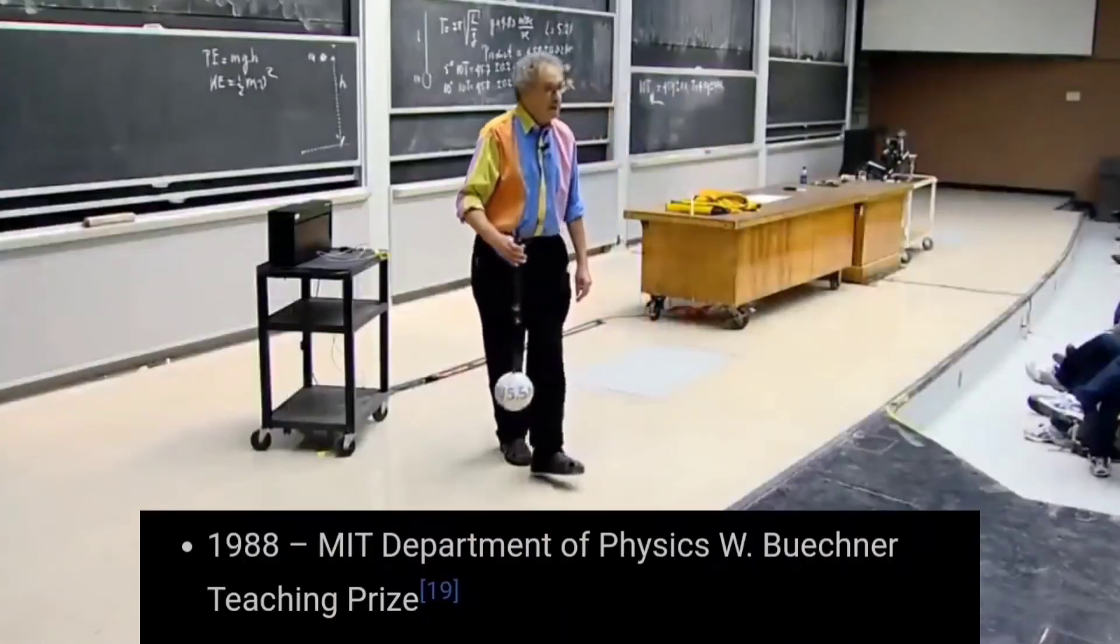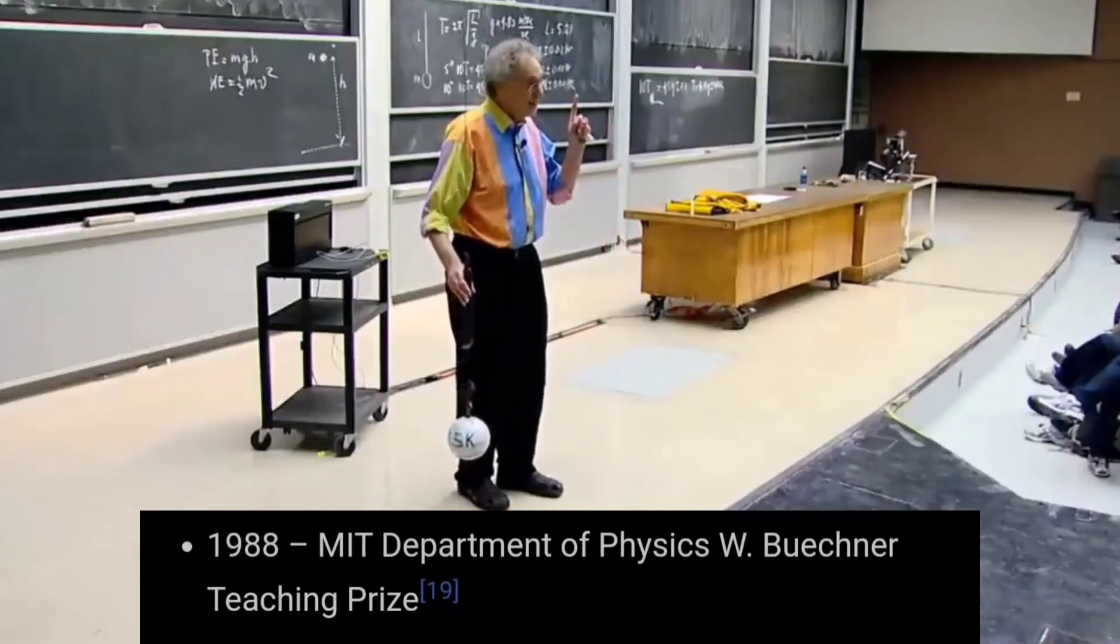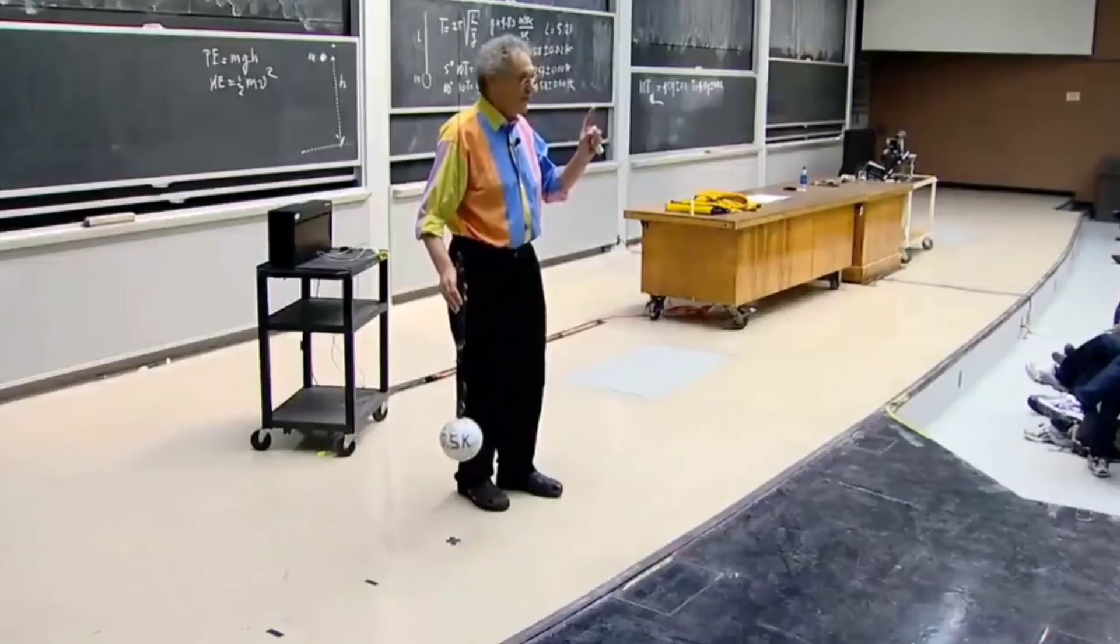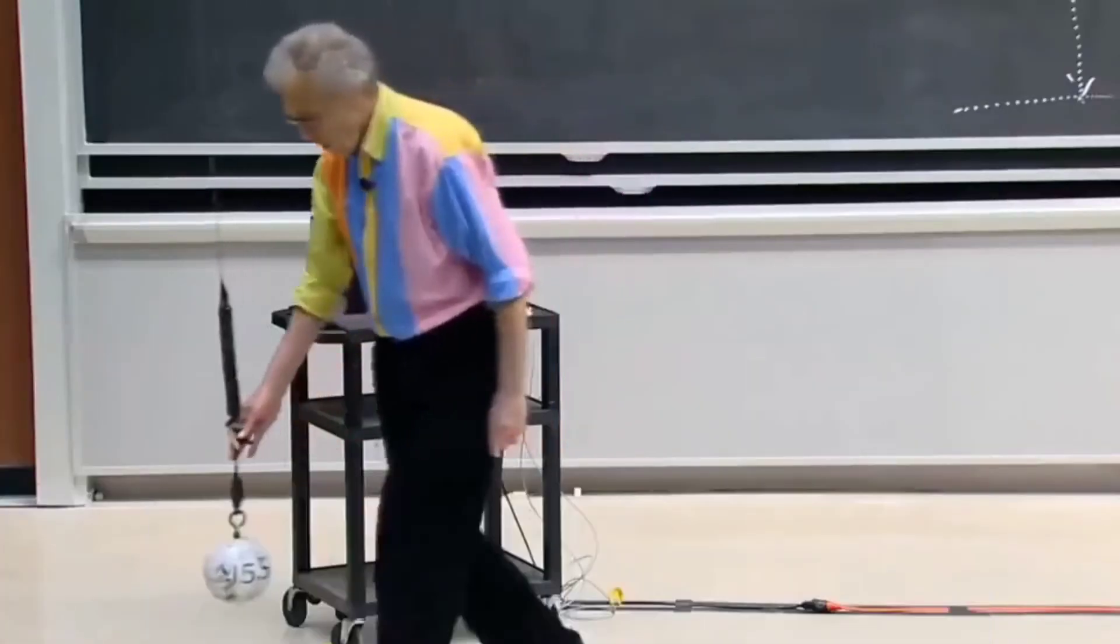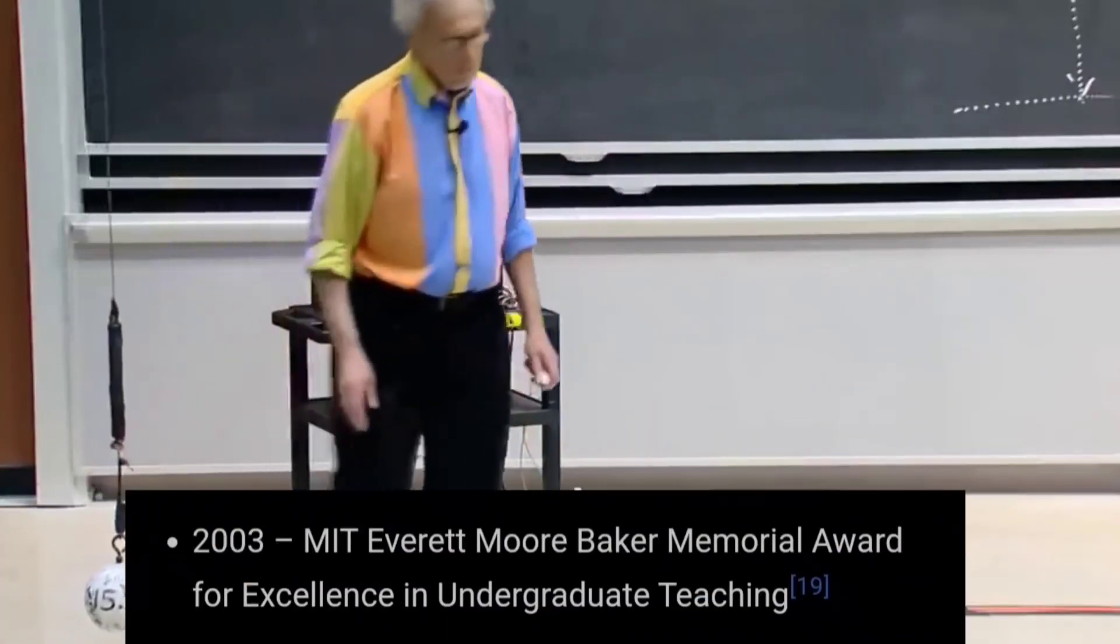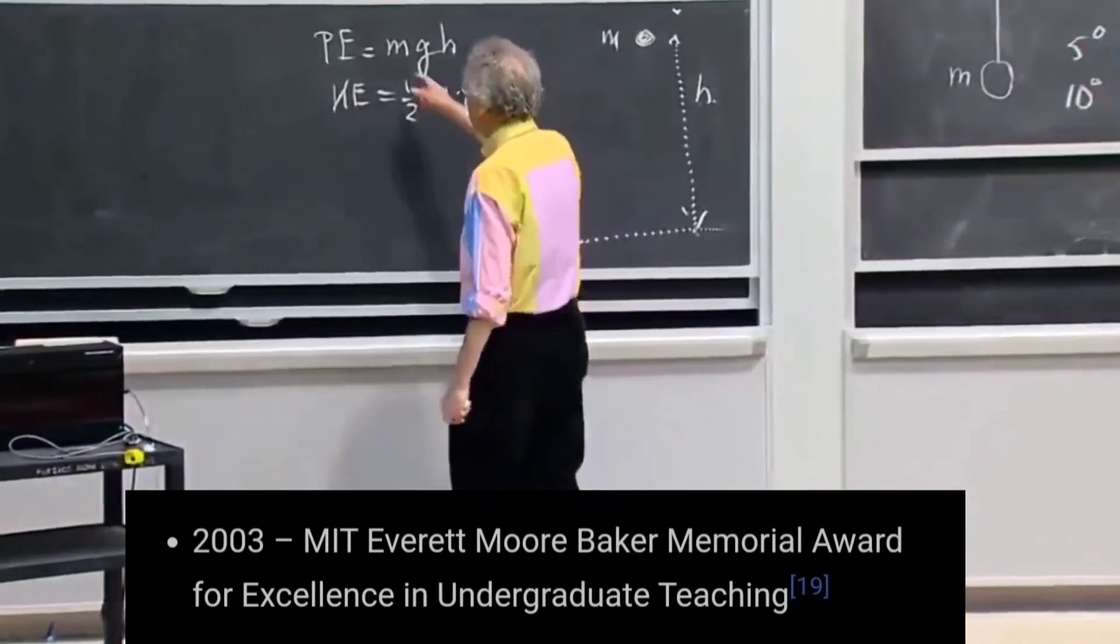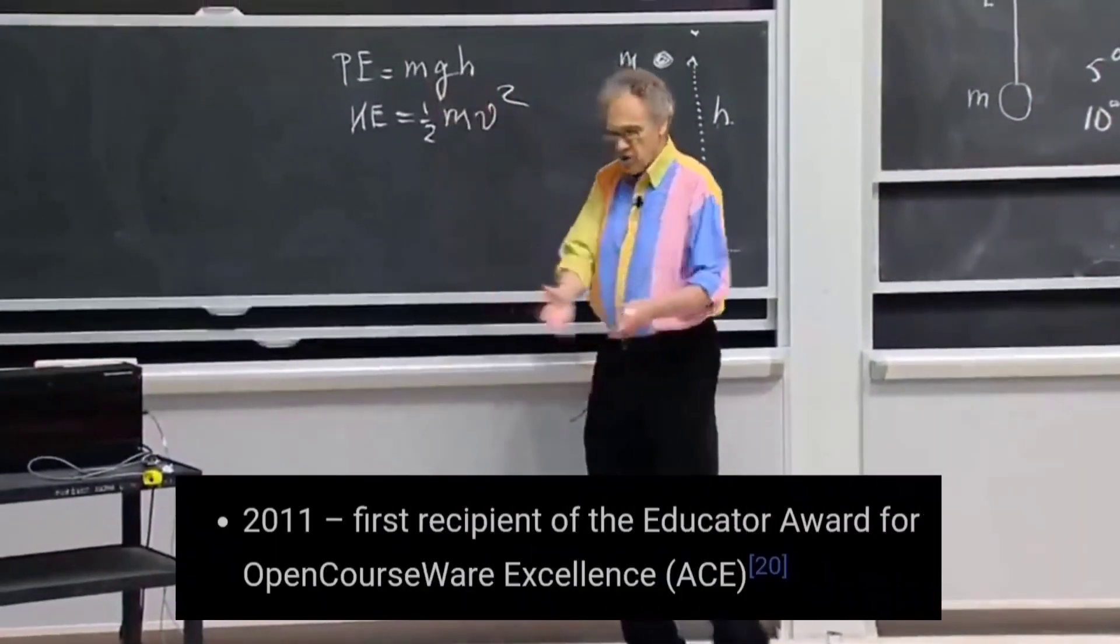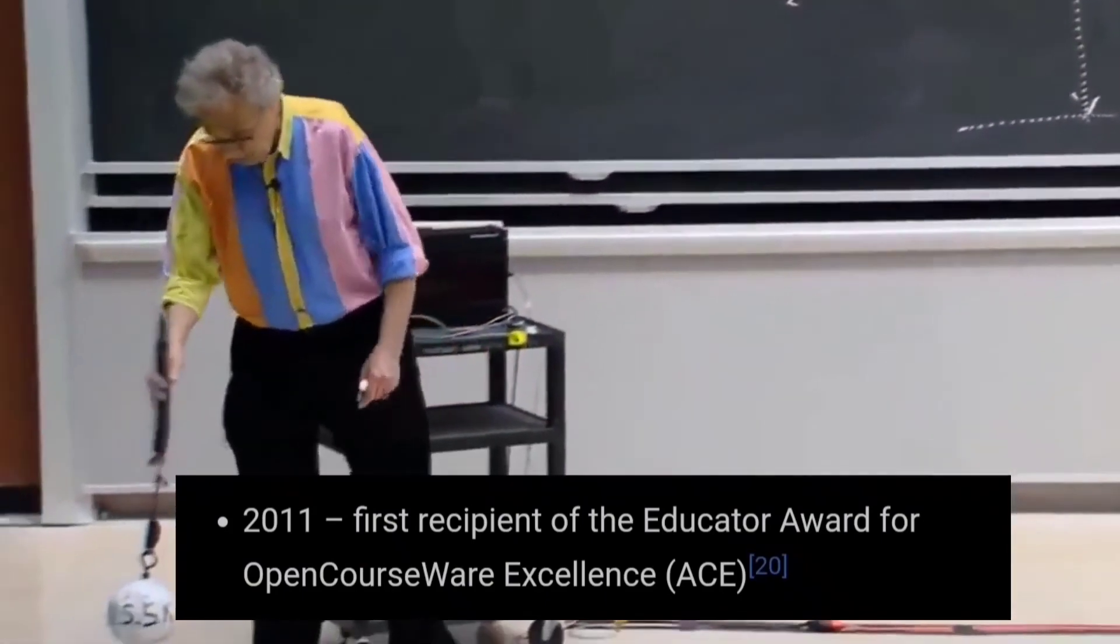Later, in 1988, he received the MIT Department of Physics W. Buechner Teaching Prize. In 1997, he got the NASA Group Achievement Award for the discovery of the bursting pulsar. In 2003, he got the MIT Everett Moore Baker Memorial Award for Excellence in Undergraduate Teaching. In 2011, he was the first teaching recipient of the Educator Award for OpenCourseWare Excellence.